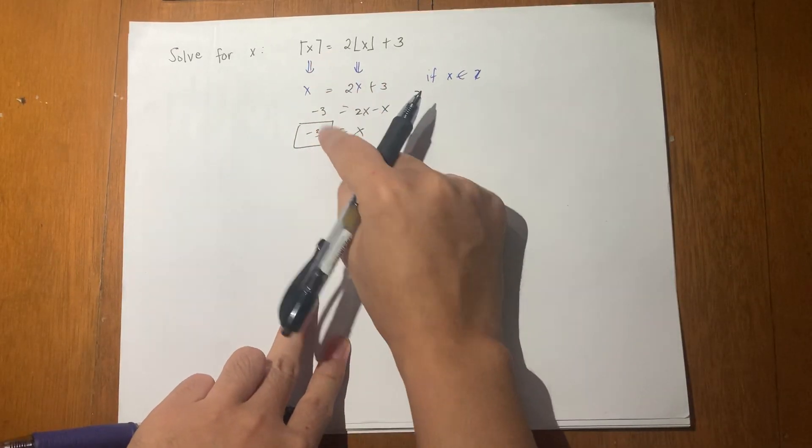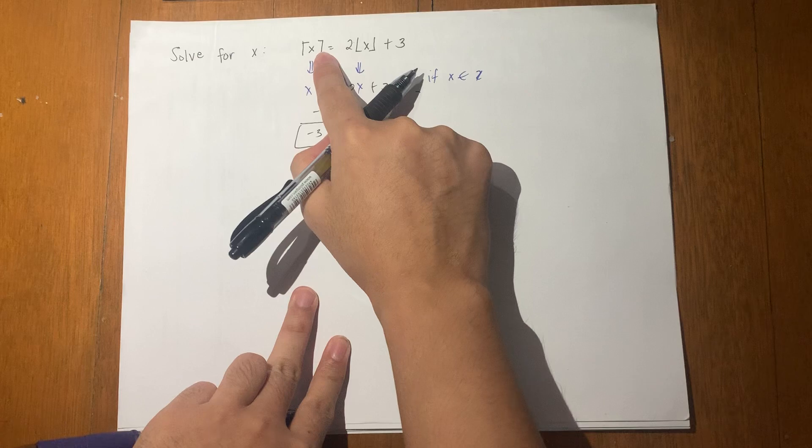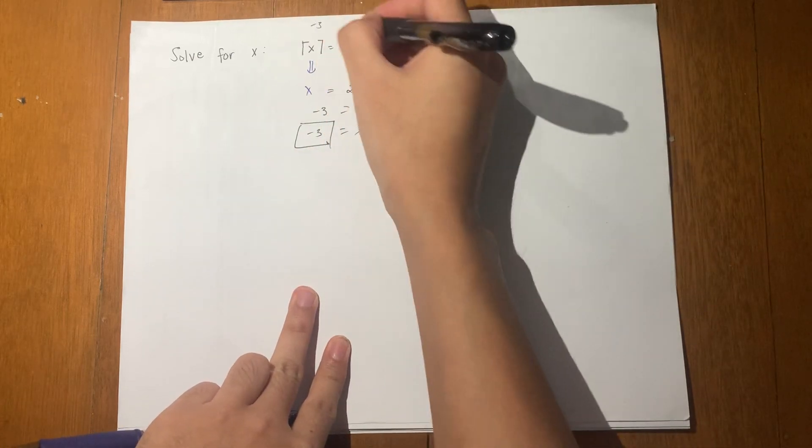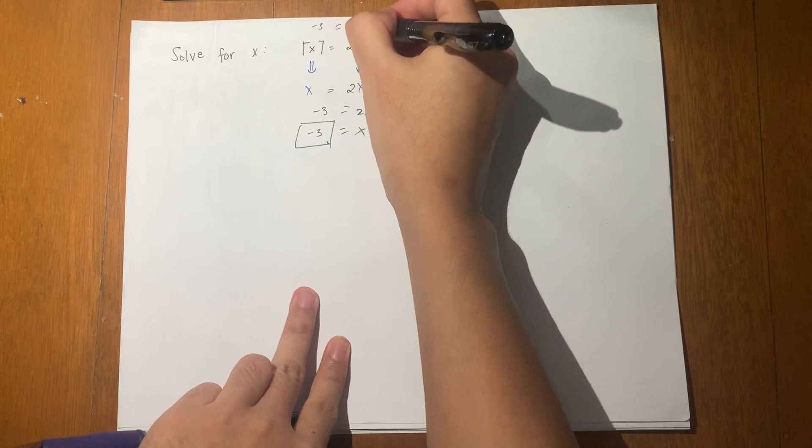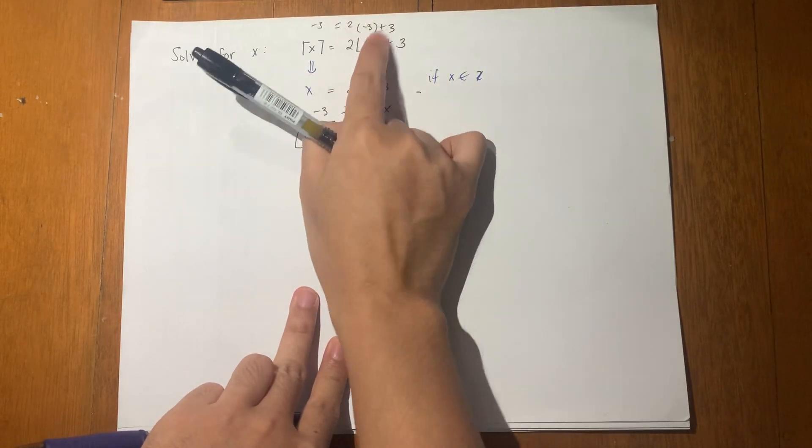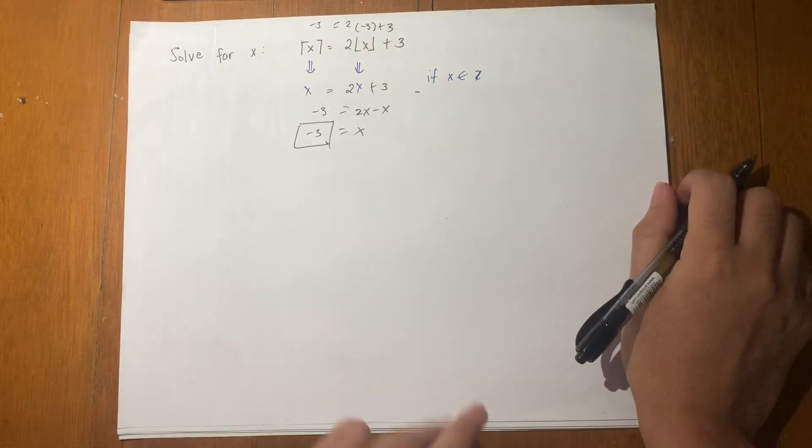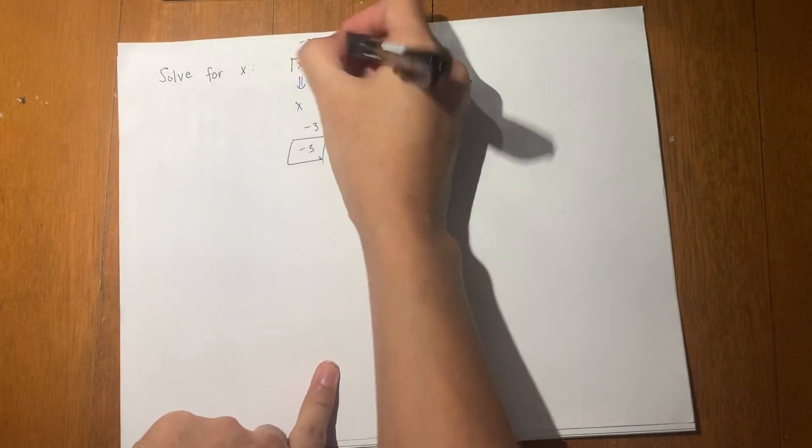Let's check. If x is negative 3, we get the ceiling of negative 3 which is negative 3, equals 2 times the floor of negative 3, that's also negative 3, plus 3. This is 2 times negative 3, that's negative 6 plus 3, which gives negative 3. So this is true.